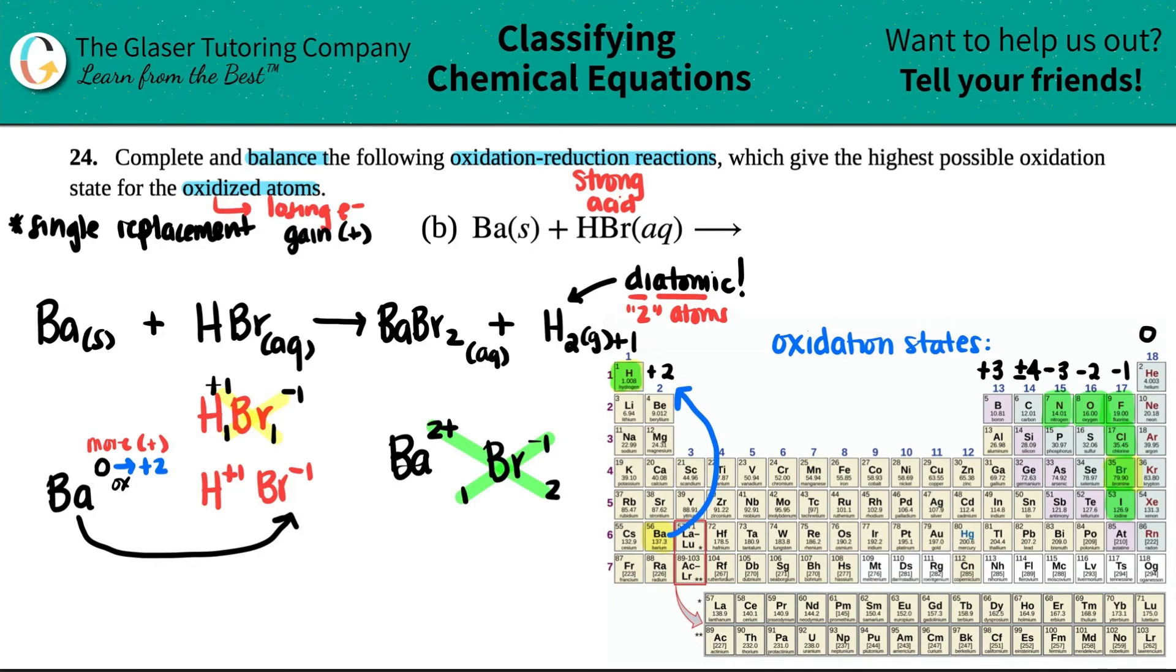Now we just got to balance. The first thing that I notice is that I have two bromines on my product side, and I only have one bromine on my reactant side. So what number am I going to put in the front here to get me to that two? I'm going to put a two here. Two bromines, two bromines. So that checks out. I have two hydrogens. I got two hydrogens. So that checks out. And then I got one barium and one barium. So we're all good here. So this is your completed and balanced oxidation reduction reaction. And we gave barium the highest number. It was a plus two and we're all good.